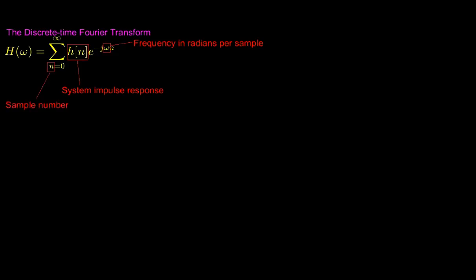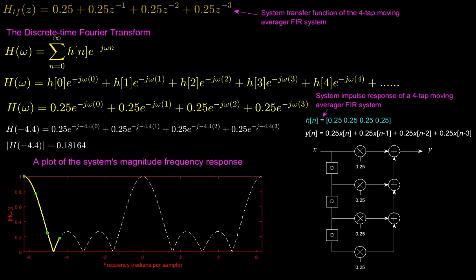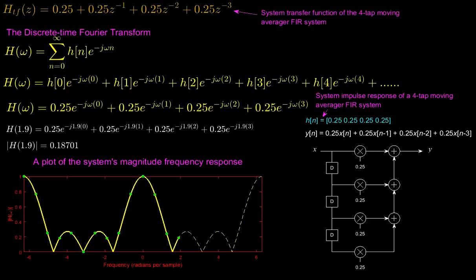As a practical example, the magnitude frequency response of a four-tap moving averager system is shown over the range of frequencies from -2π to 2π radians per sample, with some of the calculations shown on the screen.